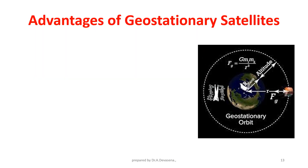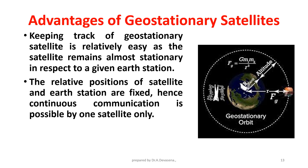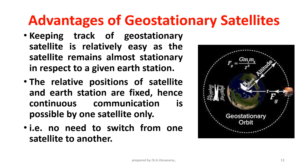Advantages of geostationary satellites. Keeping track of a geostationary satellite is relatively easy as the satellite remains almost stationary with respect to a given Earth station. The relative positions of the satellite and the Earth station are fixed. Hence, continuous communication is possible by one satellite only, and there is no need to switch from one satellite to another.